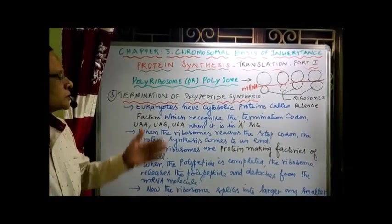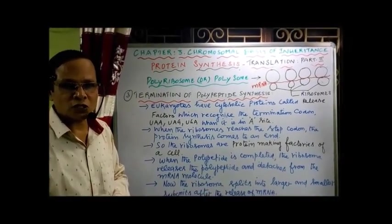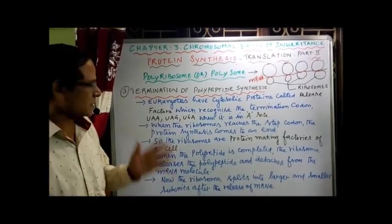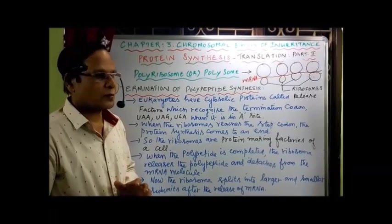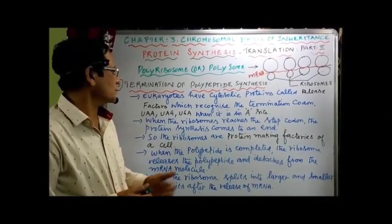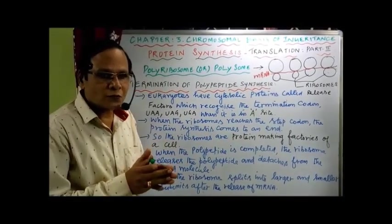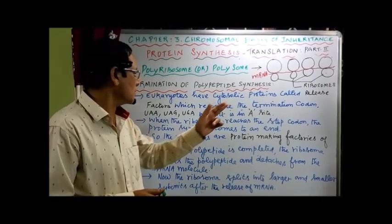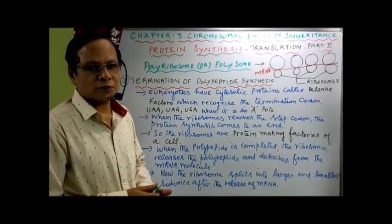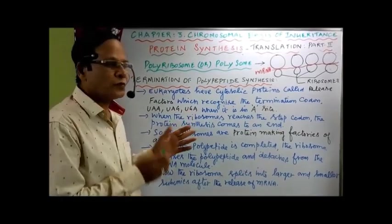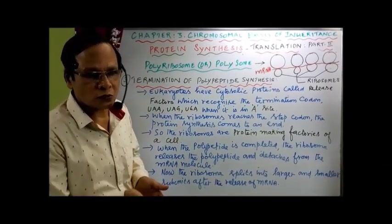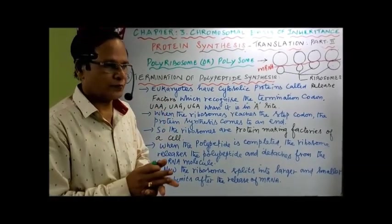So with that I concluded the second event of the translation process — Elongation. I completed Initiation and Elongation of Translation. Now we have to cover the Termination of polypeptide synthesis. Eukaryotes have cytosolic proteins present in the cytoplasm called release factors. Their function is to recognize the termination codons — either UAA, UAG, or UGA — when present on the A-site. So this is the starting point of termination.